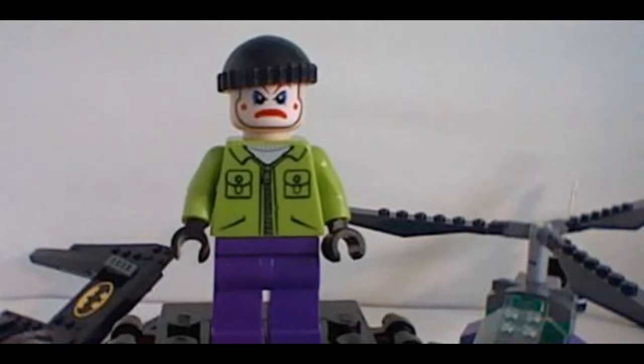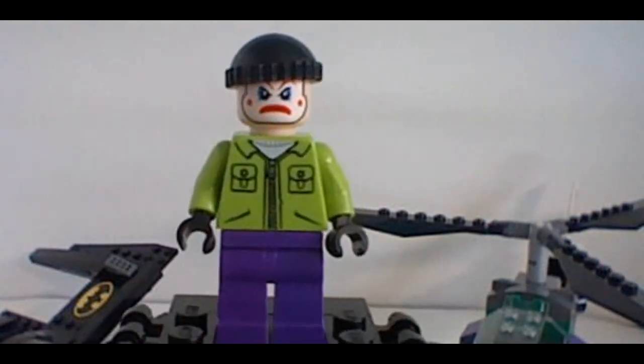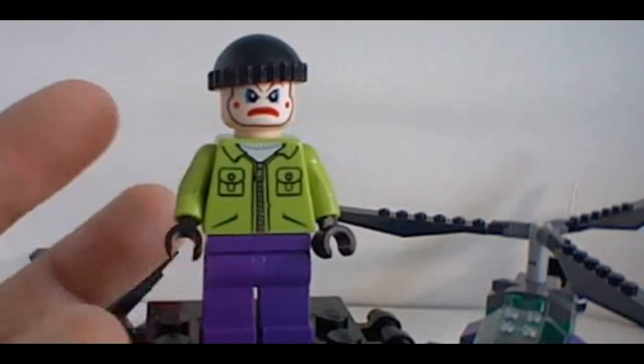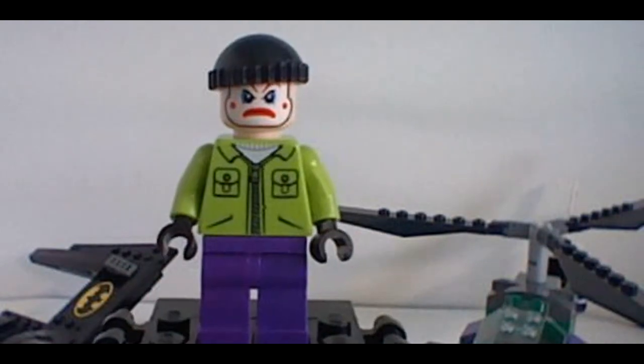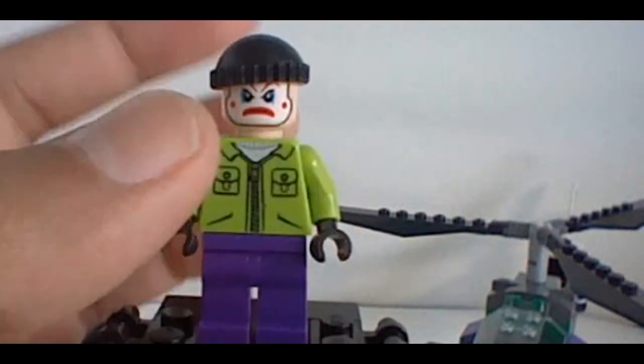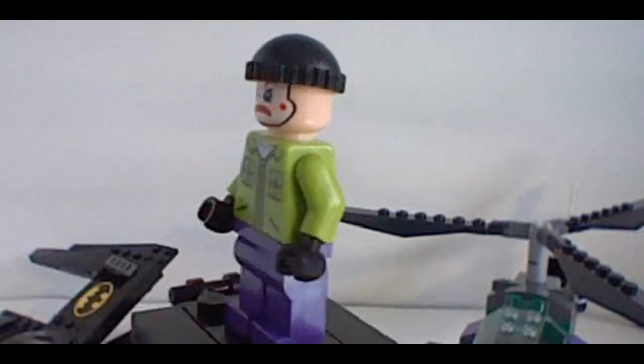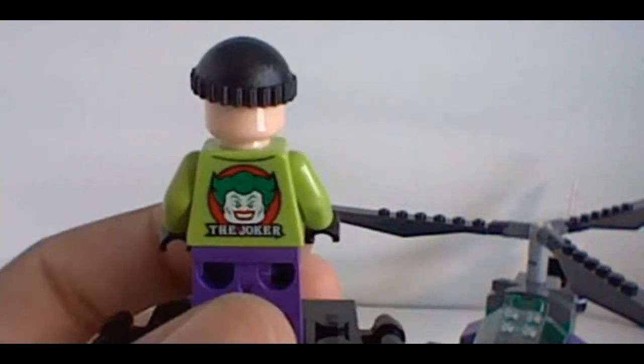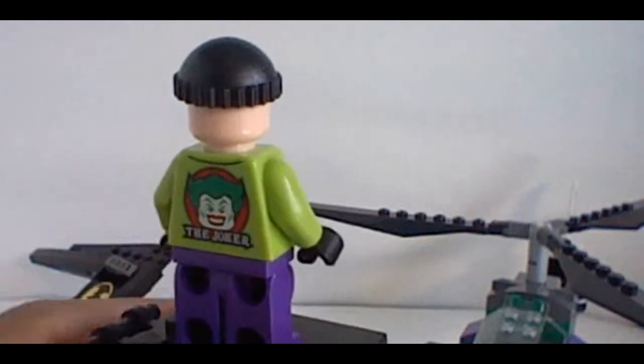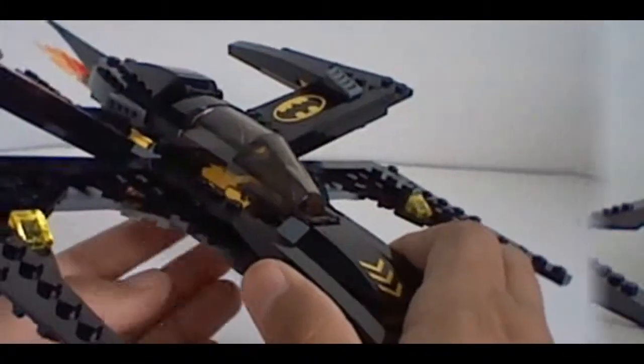Last but not least, he has Joker's henchman. Pretty plain minifig, but he's still pretty nice to get in the set. He has purple pants, a green jacket, and his Joker mask makeup there, and his cap. And he has the Joker symbol there, really nice printing there.